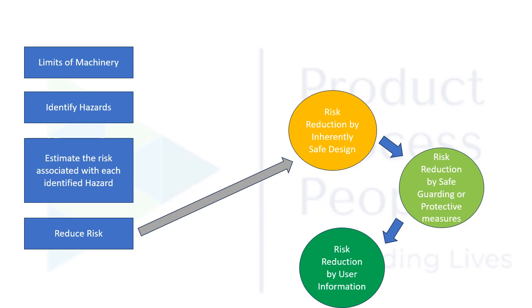Next is to reduce the risk. We have identified the risks and we have to reduce them to an acceptable limit. Every organization, country, or directive gives you some acceptable limits of risk, and we need to reduce risk below that level. Risk can be reduced by three methods as specified in ISO 12100: risk reduction by inherently safe design, risk reduction by safeguarding or protective measures, and risk reduction by user information.